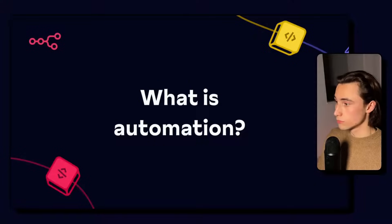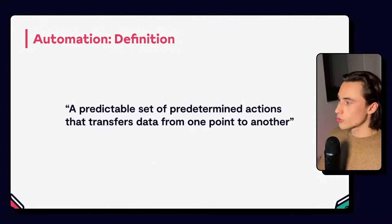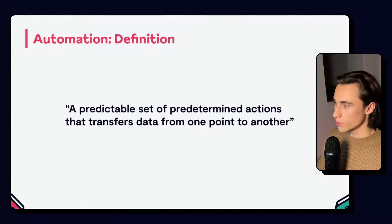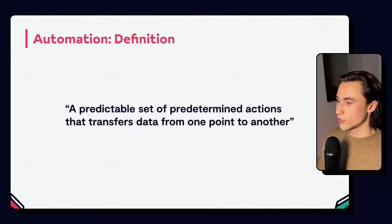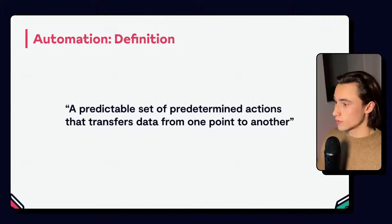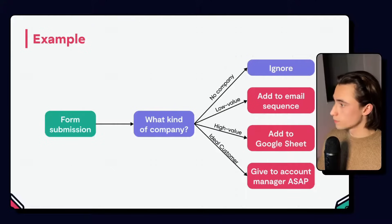So, what is automation? Let's start with the definition. Automation is a predictable set of predetermined actions that transfers data from one point to another. Instead of breaking it down like this, I would like to show you an example.